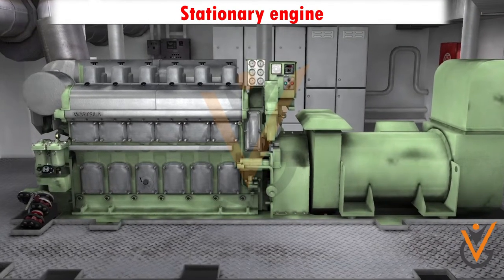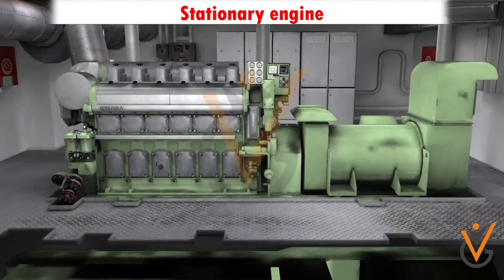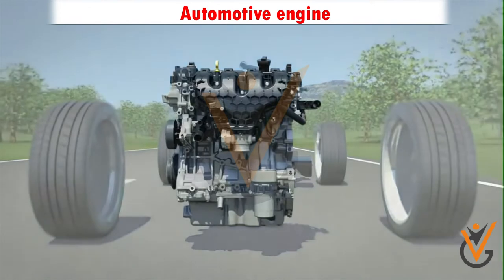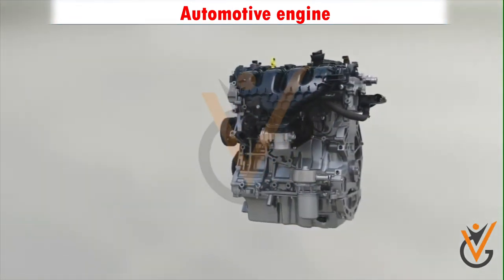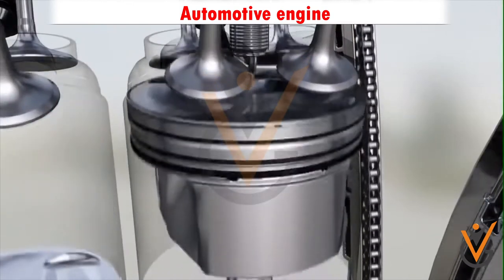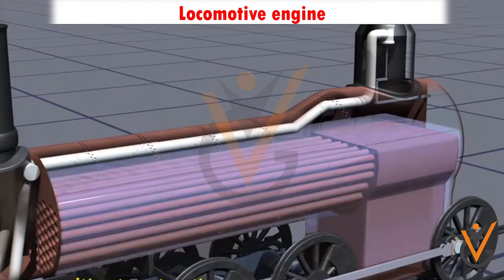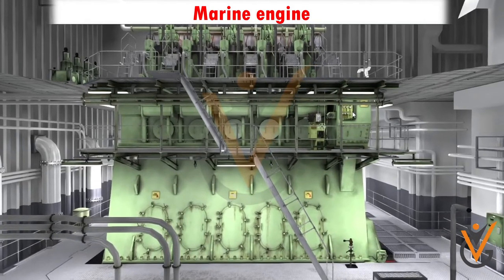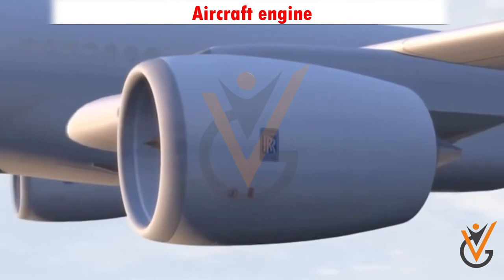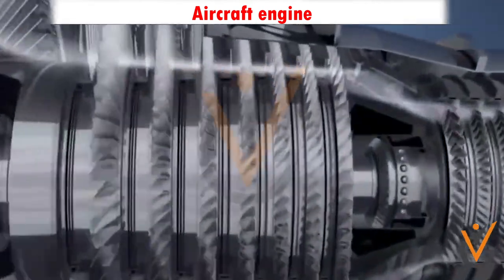On the basis of application, engines are classified as stationary engines — which do not move and are used to drive equipment like pumps, generators, mills, or factory machinery — and automotive engines used in automobile industries such as petrol, diesel, and gas engines. Locomotive engines are used in trains. Marine engines are used for boat or ship propulsion. Aircraft engines include radial and gas turbine engines used for aircraft propulsion.